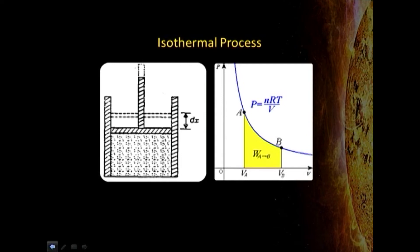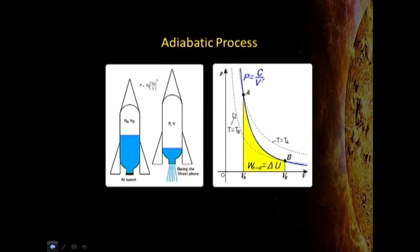In an isothermal process, a change is carried out such that the temperature remains constant. The piston moves and the volume changes, but the temperature remains constant throughout — as seen in the expansion of a gas under isothermal conditions. In an adiabatic process, no heat is exchanged with the surroundings. It is commonly defined by the ratio of specific heats, and describes how the system can be taken from one state to another without heat exchange.